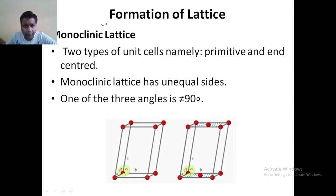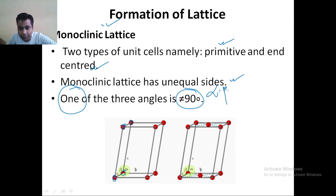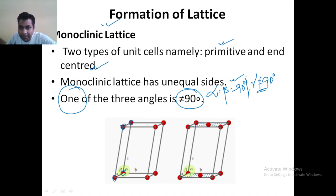The next part is your monoclinic. In monoclinic, you have only two types — primitive and the end centered. It also has unequal sides and one of the angles will not be equal to 90 degrees. Your alpha is equal to beta is equal to 90 degrees, but gamma may not be equal to 90 degrees — one of the angles cannot be 90 degrees.